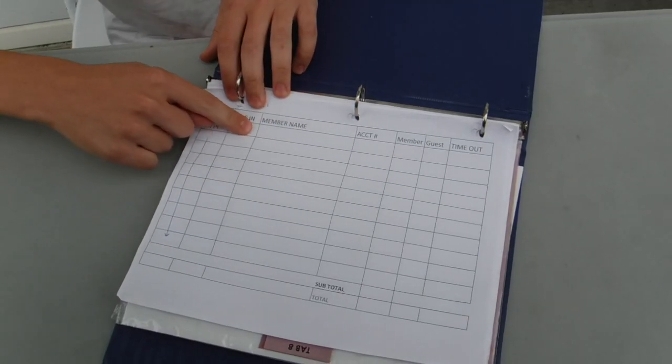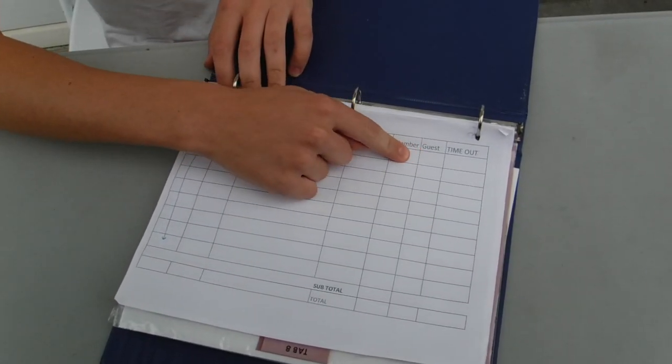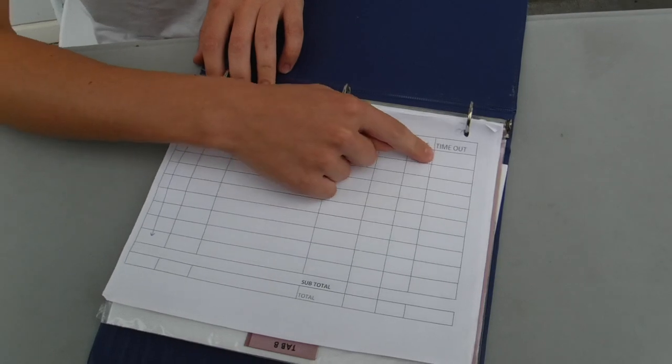Then write the time that they arrived, put the number of members, and then if they brought any guests, put in the number of guests they brought.